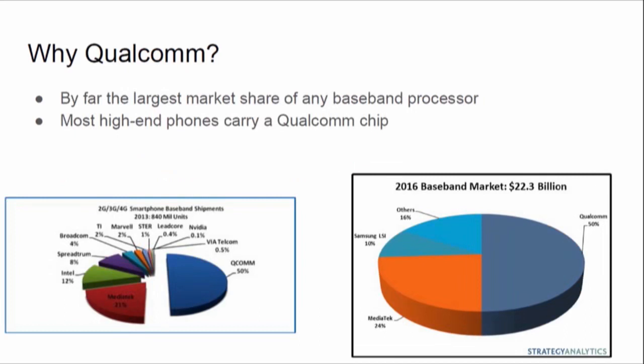I picked Qualcomm to focus on as they had by far the largest market share of the baseband market. At least up until recently, most high-end phones carried a Qualcomm chip — all your Snapdragon processors and most high-end Androids. Huawei makes some of their own basebands and Samsung makes some with their Exynos chips. But the main reason Qualcomm owns a lot of the market is they were the big proponent of CDMA. AT&T is GSM and Verizon is CDMA, and Qualcomm essentially has a death grip on all the CDMA patents in the United States. If you want to sell a phone that does CDMA, you kind of have to stick a Qualcomm chip in it.